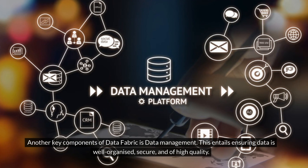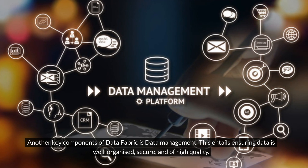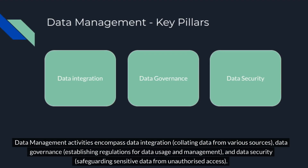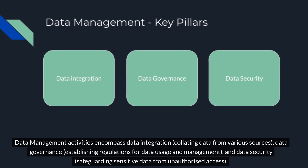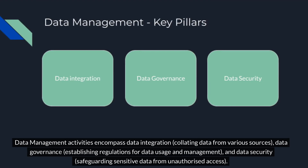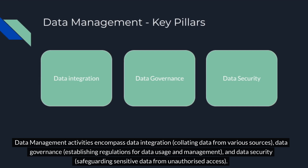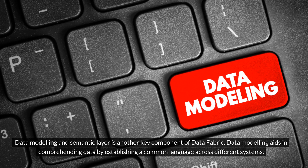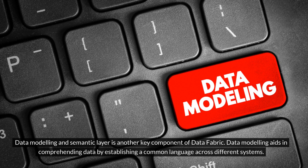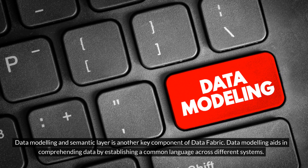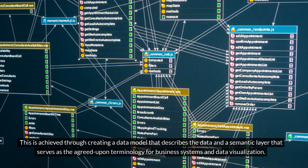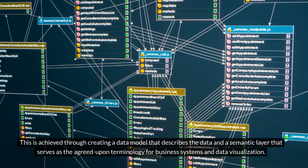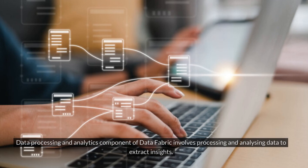Another key component of data fabric is data management, which entails ensuring data is well-organized, secure, and of high quality. Data management activities encompass data integration — collating data from various sources — data governance, establishing regulations for data usage and management, and data security, safeguarding sensitive data from unauthorized access. Data modeling and semantic layer is another key component of data fabric. Data modeling aids in comprehending data by establishing a common language across different systems through creating a data model that describes the data and a semantic layer that serves as the agreed-upon terminology for business systems and data visualization.